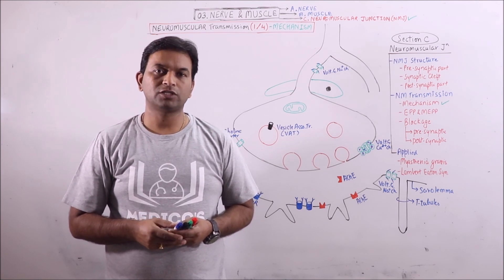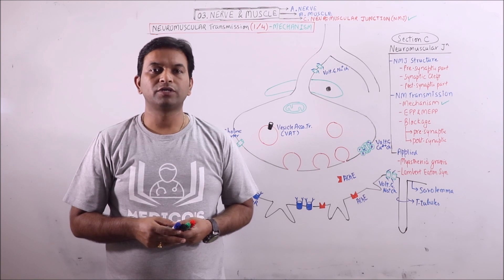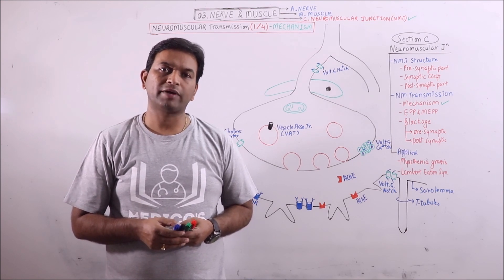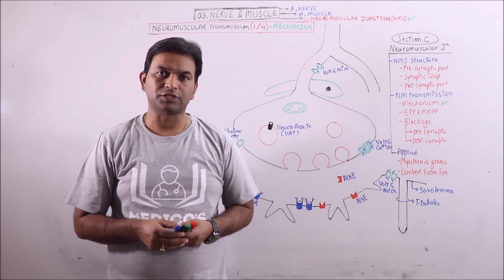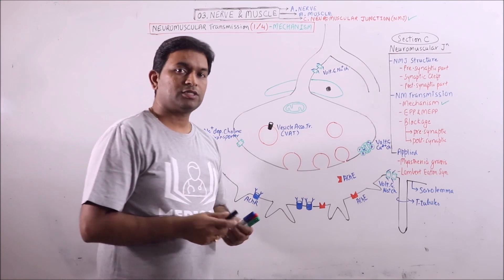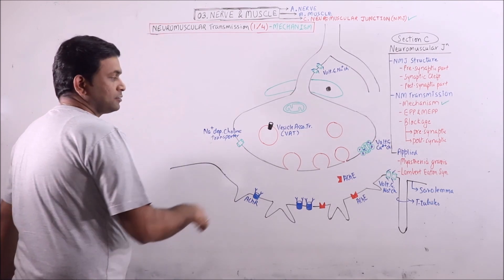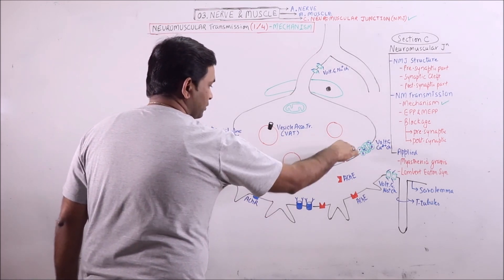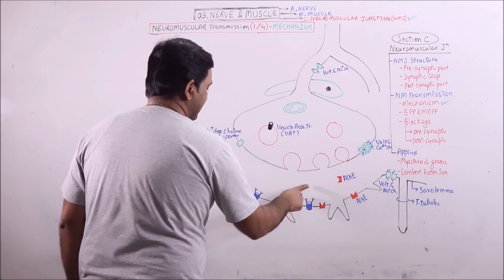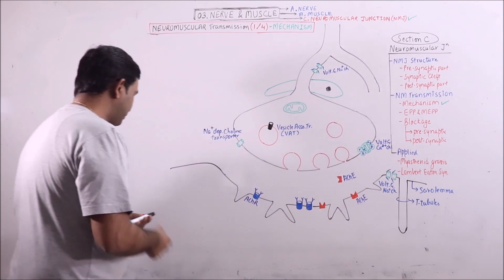This is a series of four lectures on Neuromuscular Transmission and I am going to discuss the normal process or mechanism involved in Neuromuscular Transmission. We can divide this process under three headings: pre-synaptic events, events in the synaptic cleft, and events in the motor end plate.